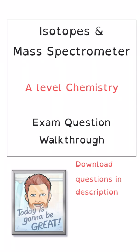Hello everybody and welcome to this A-level chemistry walkthrough video. We're going to be taking a look at a 12 mark question about the mass spectrometer and isotopes, and this is part of the atomic structure topic. You can download a copy of the questions in the description and have a go at them yourselves, and then watch this video.